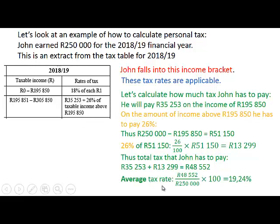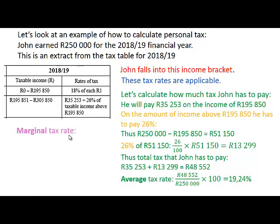To calculate his average tax rate, we take the total tax of 48,552 rand and divide it by his total income of 250,000 rand, times 100. That gives us 19.24%. His marginal tax rate is the highest rate of tax that he pays — on the amount of 51,150 rand — which is 26%.